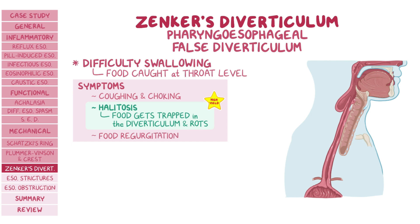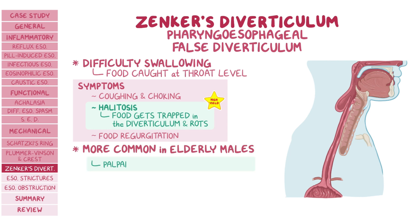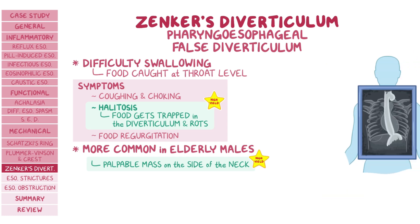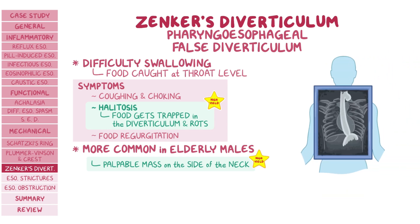Food regurgitation is also a symptom and can lead to food aspiration and subsequent pneumonia. Zenker's diverticulum is more common in elderly males, who typically present with a palpable mass on the lateral side of the neck. The best way to diagnose a Zenker's diverticulum is by barium swallow, where the diverticulum fills with contrast medium, and the treatment includes surgical removal of the diverticulum.